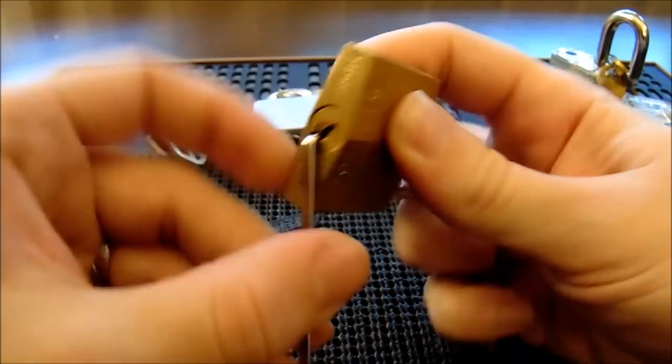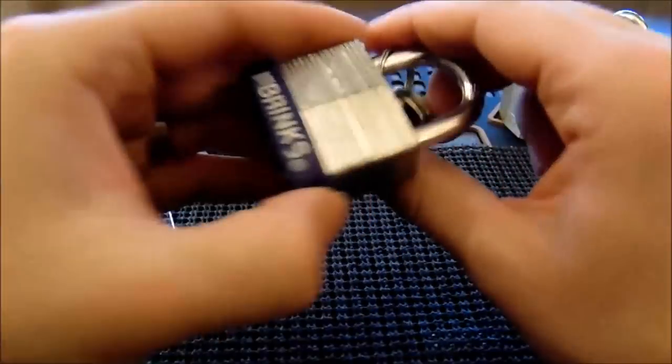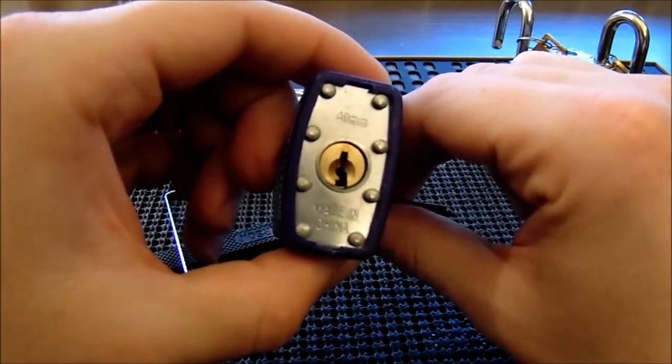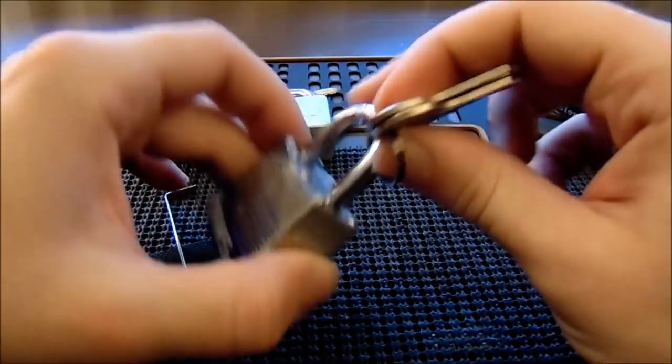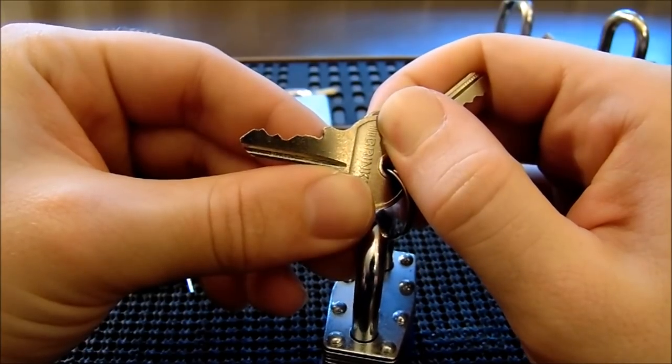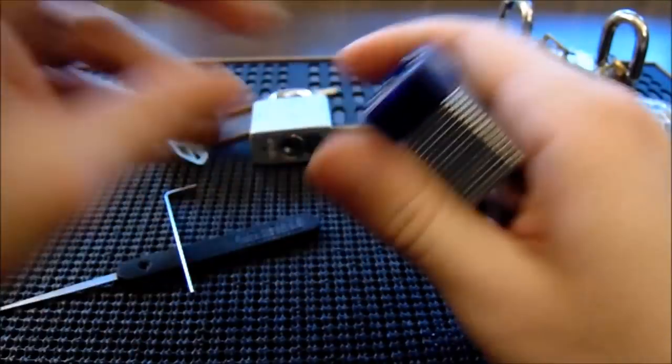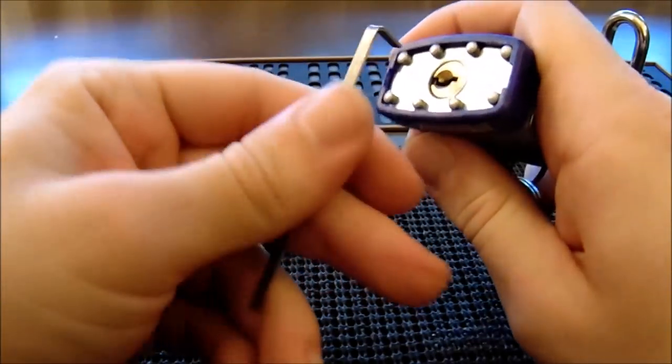That's the Master Lock number 140. Now we have a Brinks lock. This is the 40 millimeter laminated padlock. This one has two spools in it. Bitting's not terrible but it's not great either. It's got a little bit of variation in it, and it's a four pin lock.